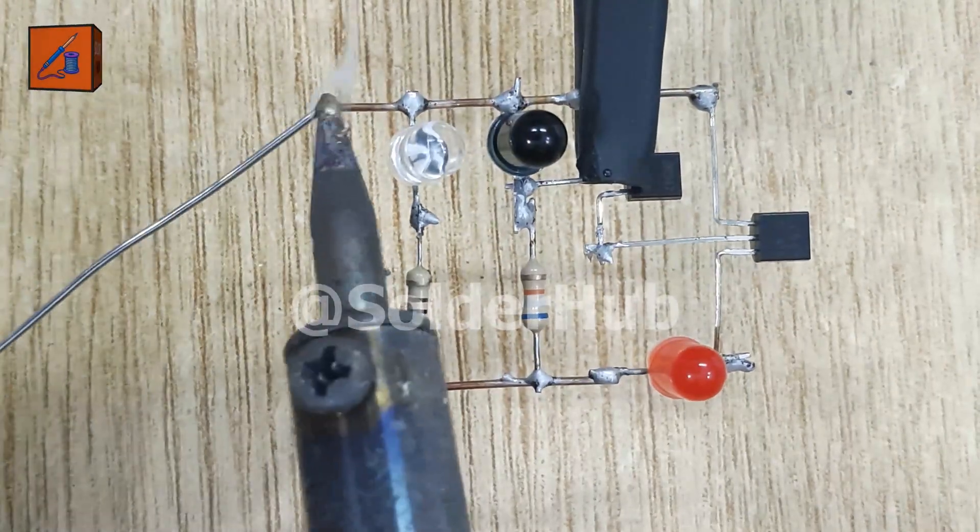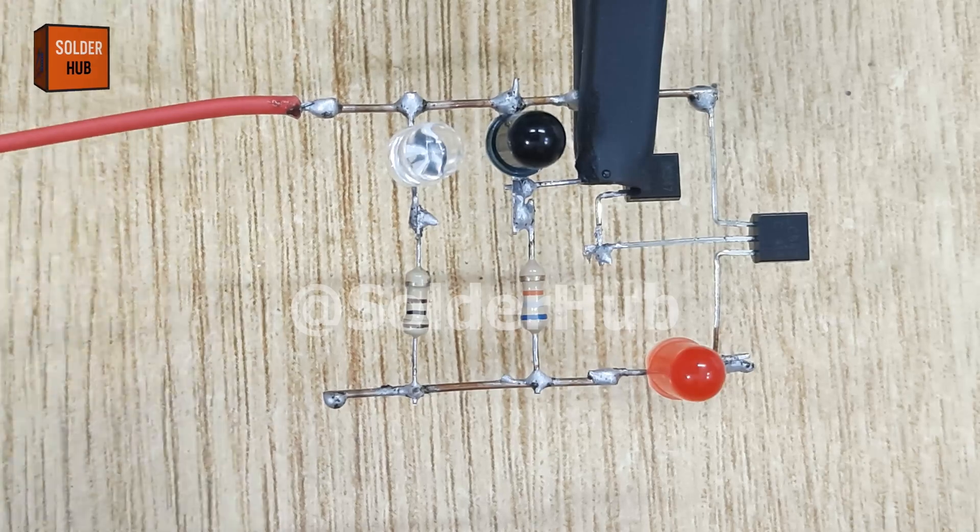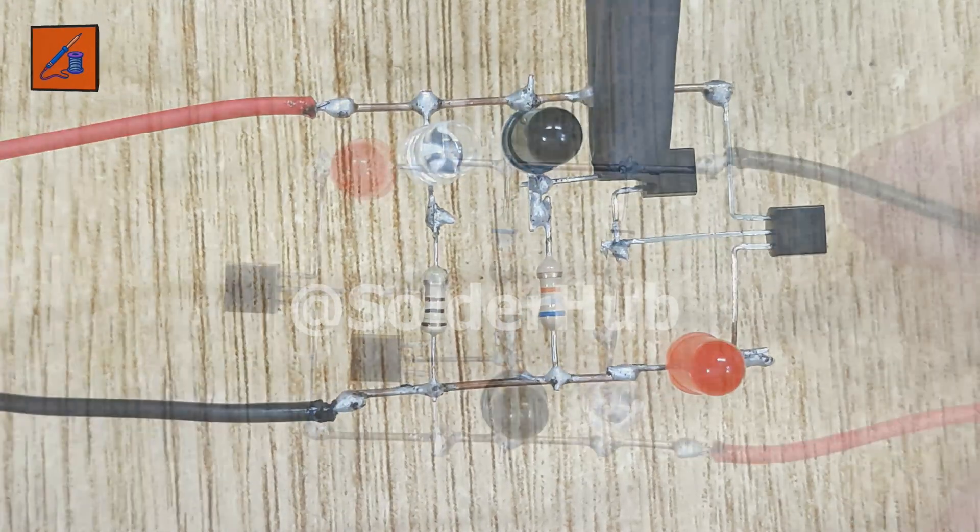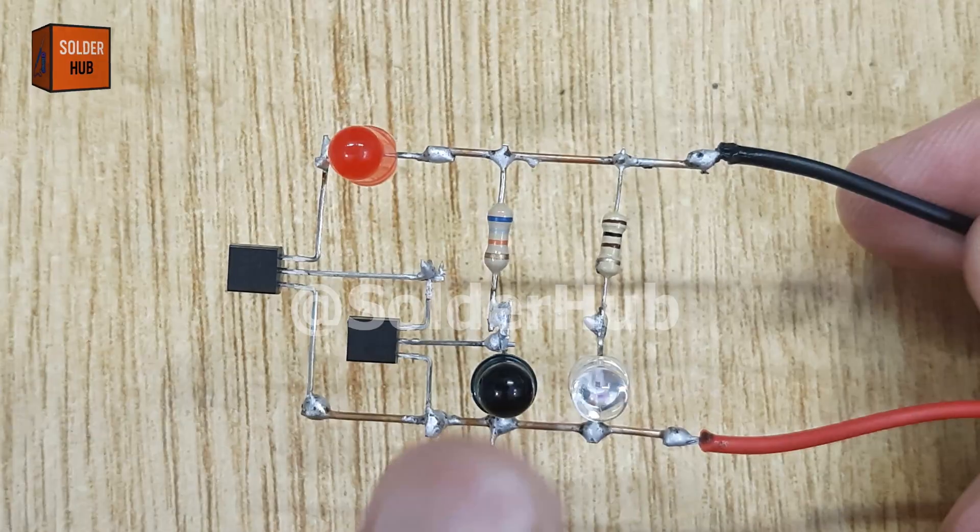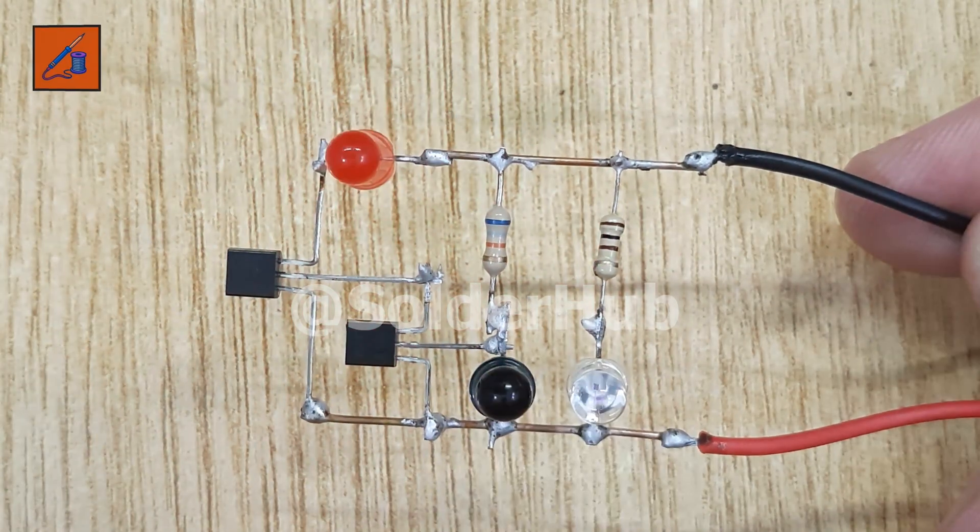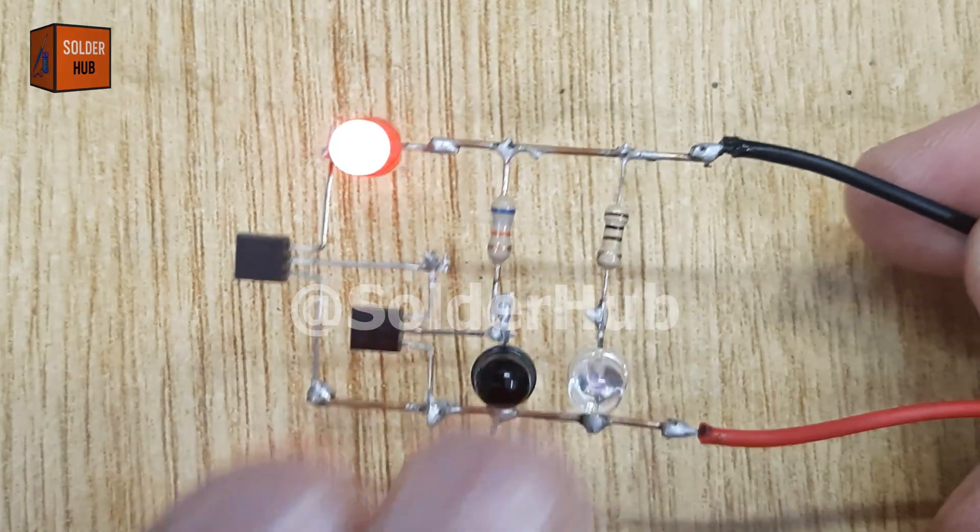Finally, let's power it up. I'll connect the positive and negative wires of a 3.7-volt battery to our circuit. And now, the magic happens. When I bring my finger or any object close to the IR sensor, the LED lights up instantly. No touch, no switch, just proximity sensing.